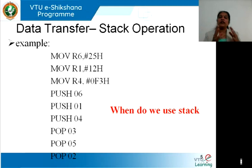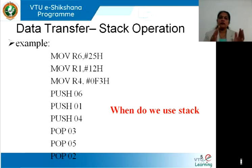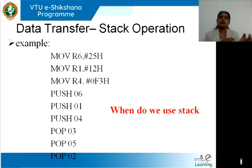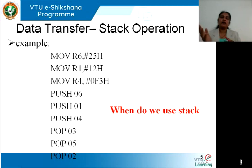What can be done is: before entering the function, the contents of registers R1, R2, and R3 can be pushed onto the stack. Let the function use the same registers and operate on the data — modify and do all that is needed. Once the function returns and control is transferred back to the main program, we can pop the contents of those registers from the stack back into R1, R2, and R3. That is the main use of the stack memory and the push and pop instructions.